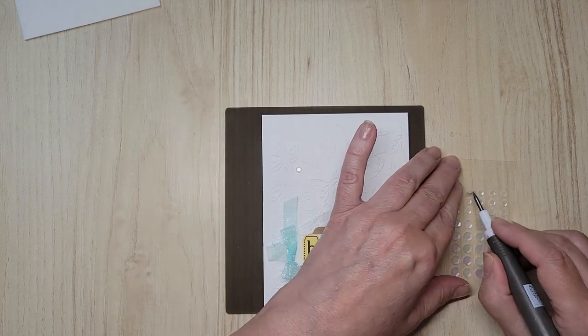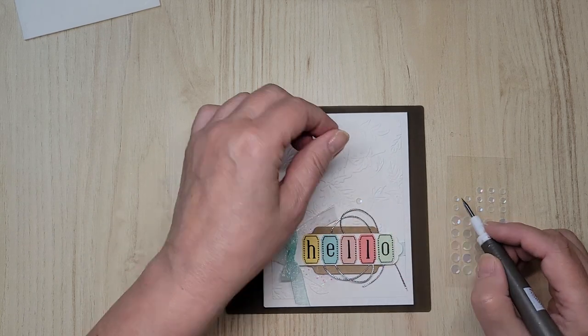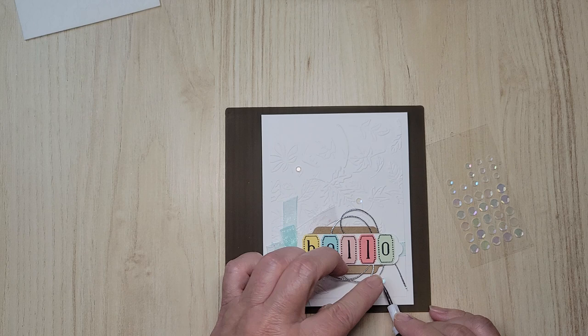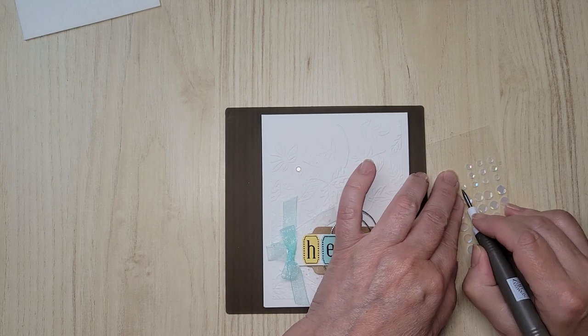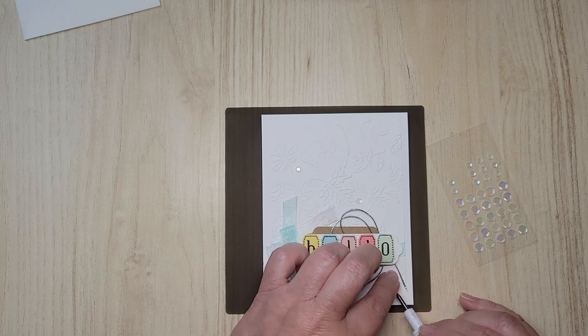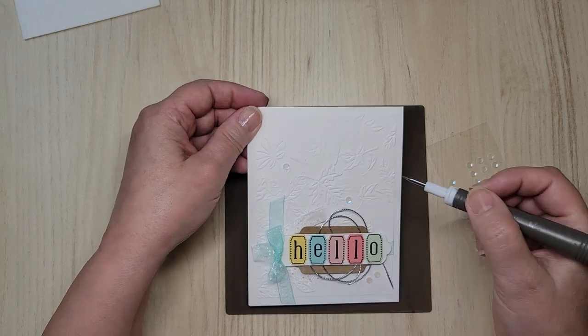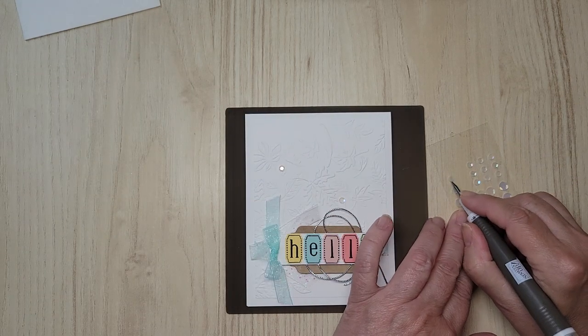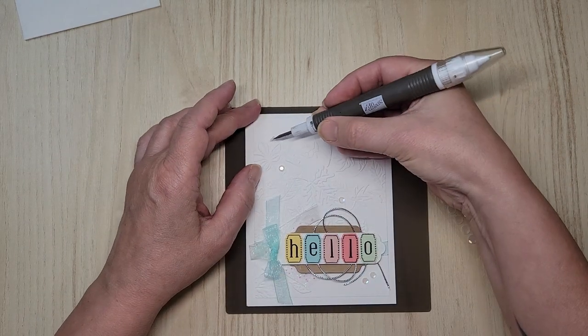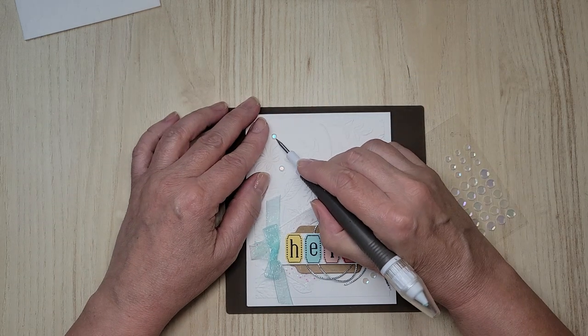So I'm just going to be kind of random, just like leaves falling, just like the leaves. These are so pretty. Because they've got their iridescent, so they're going to pick up all the colors around.